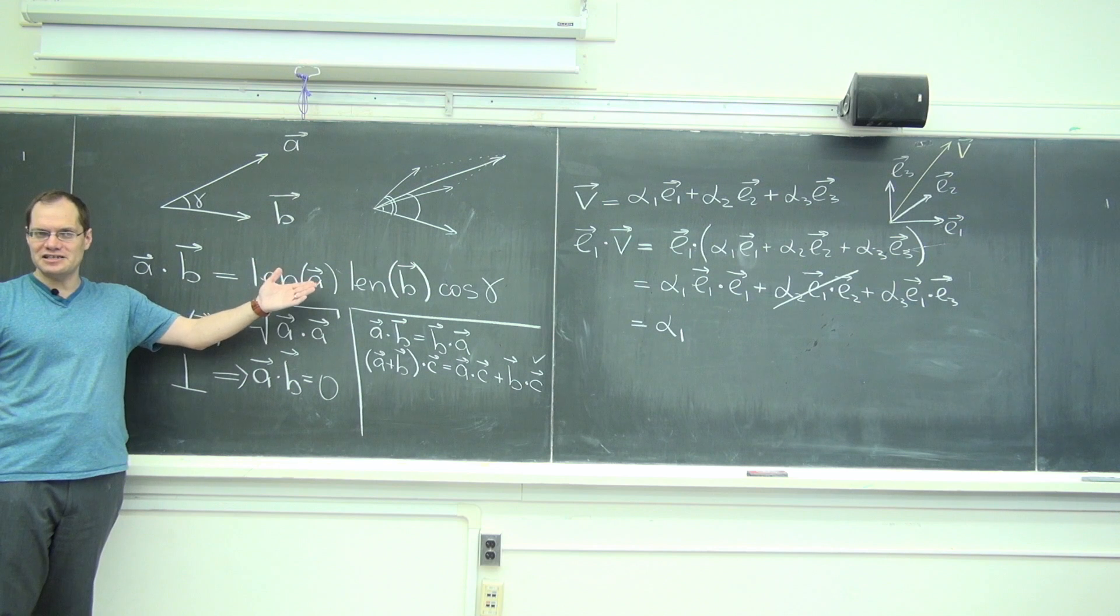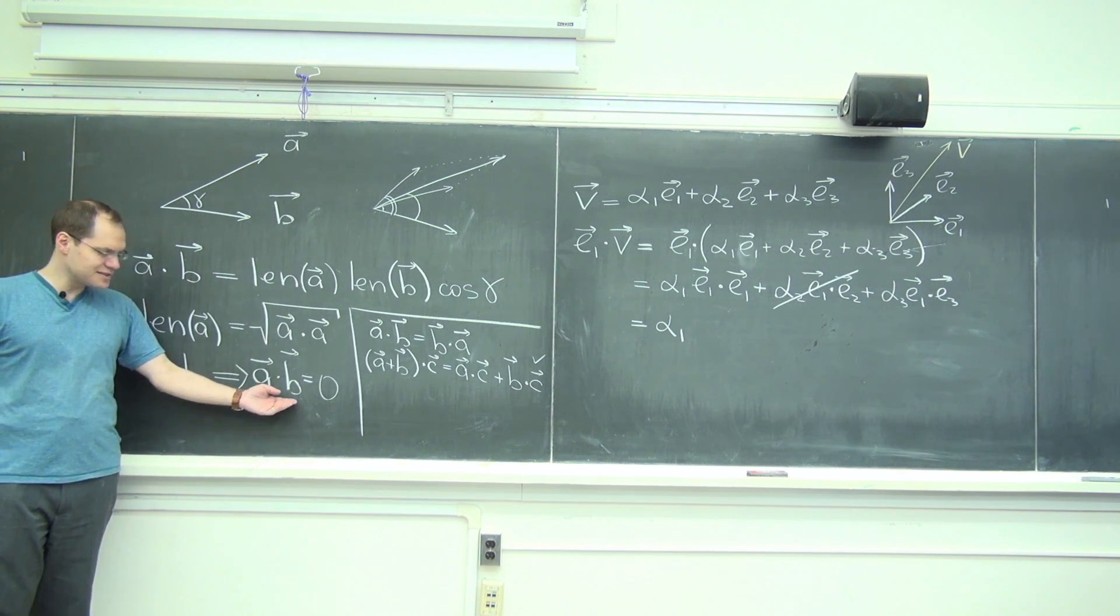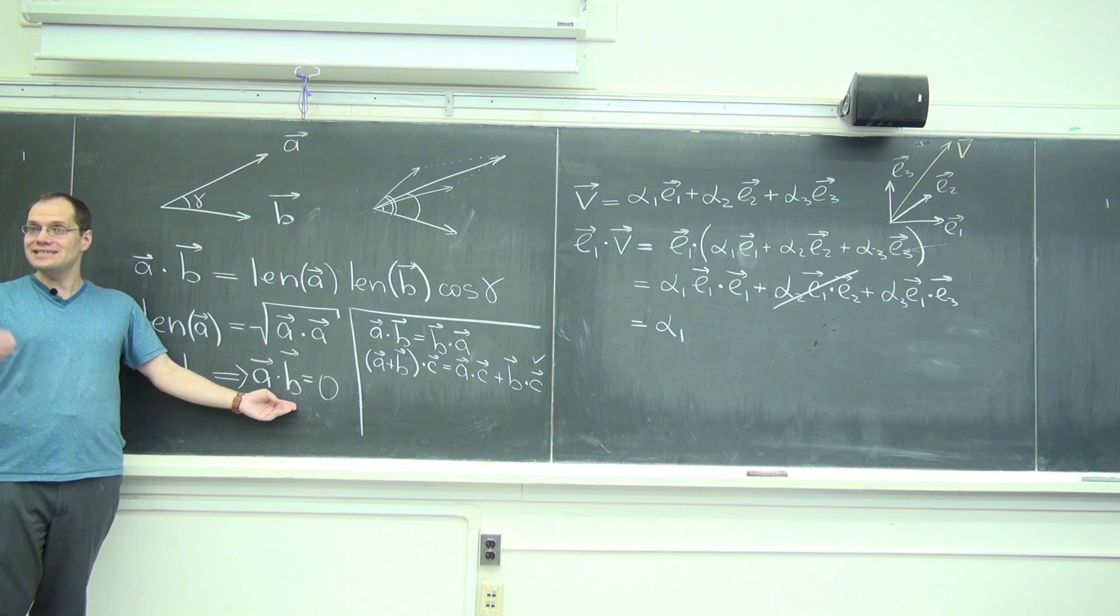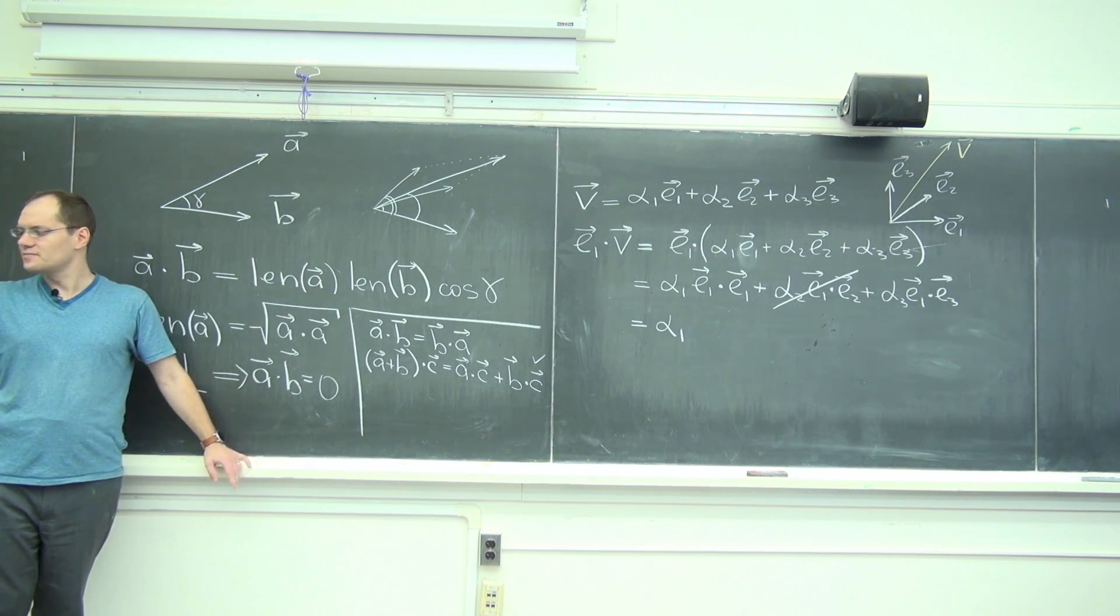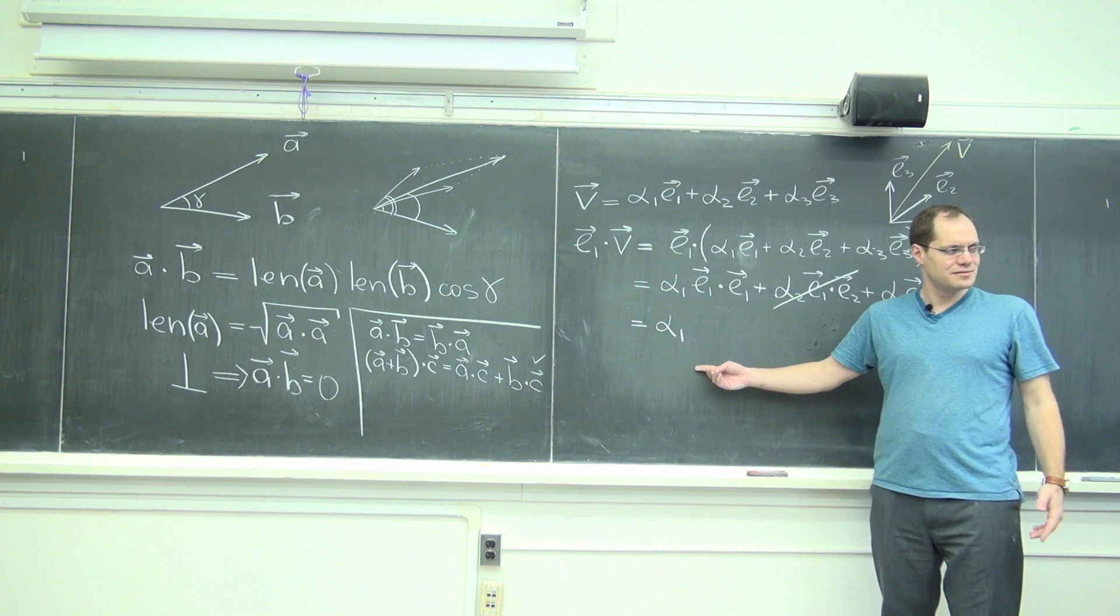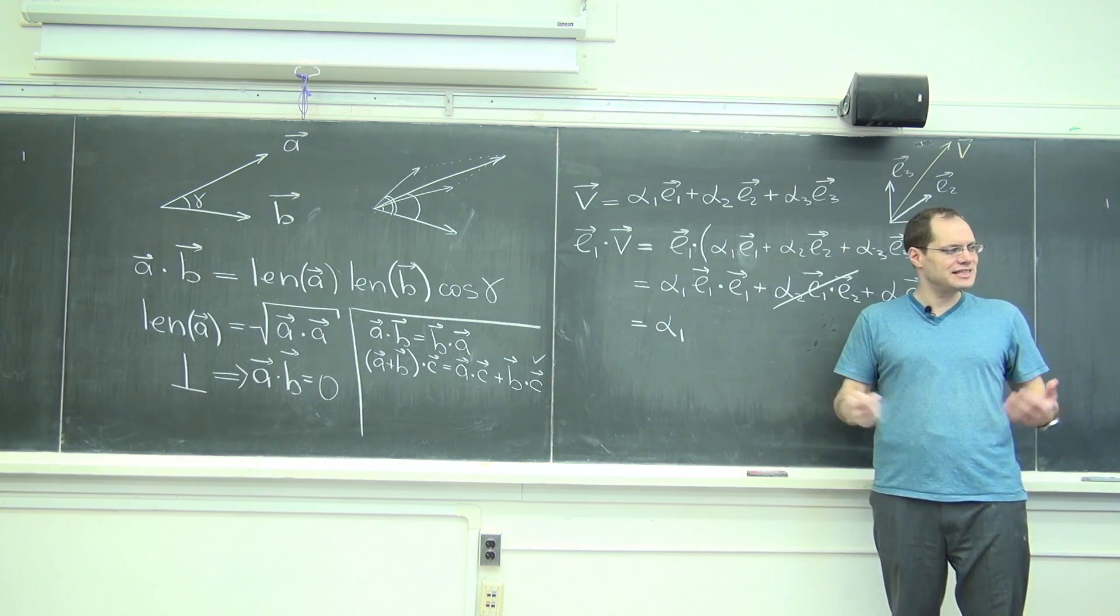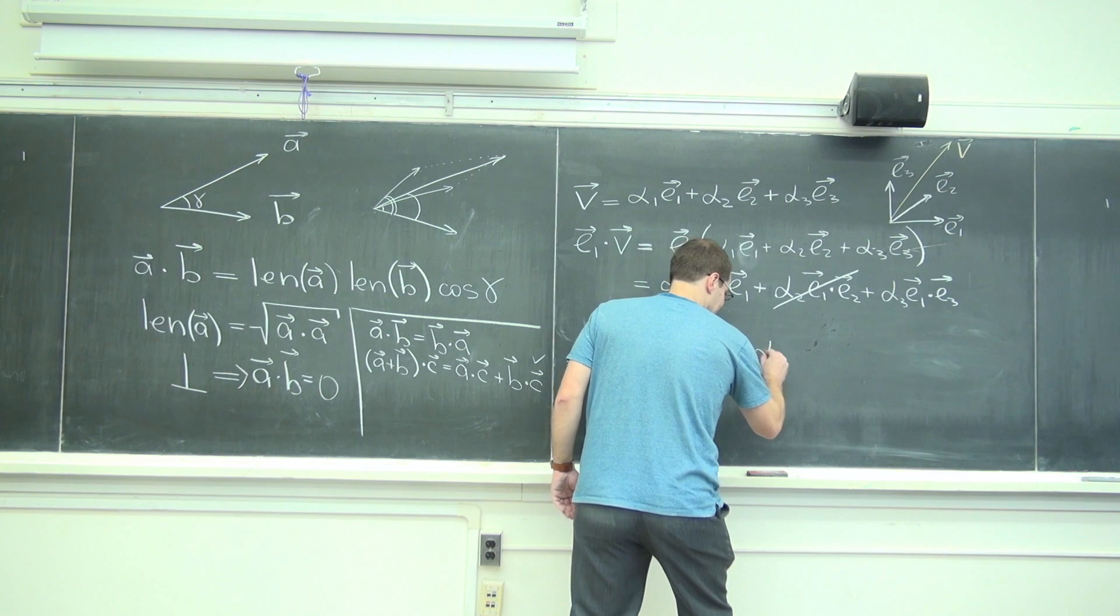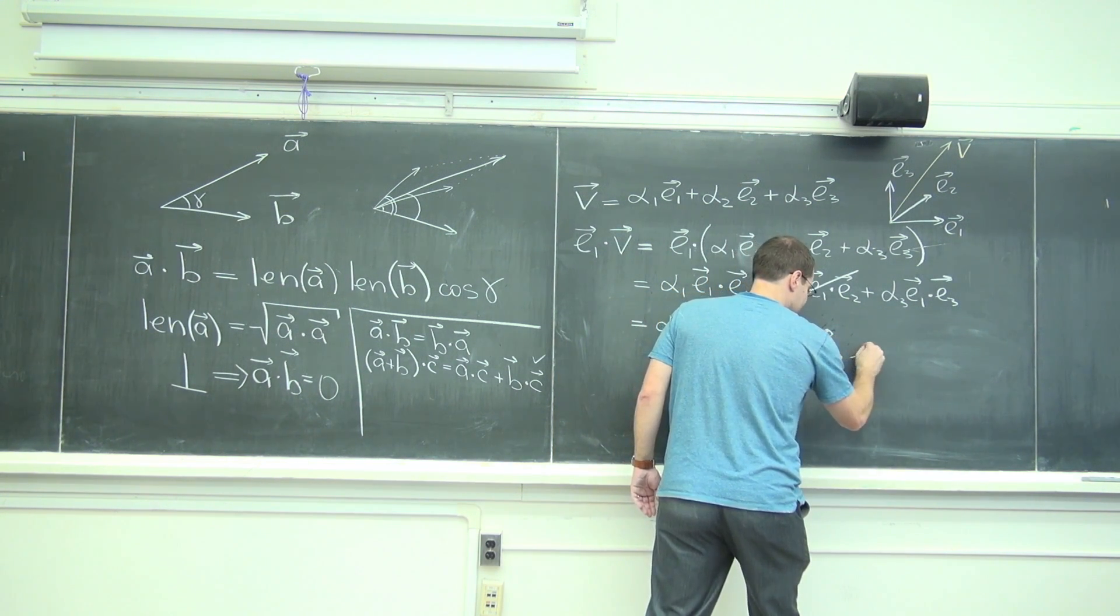Instead of saying A is orthogonal to B, you say A dot B equals zero. And what's E1 dotted with E3? Zero. So it's just alpha one. Hey, we got the coefficient. That's our goal. Decomposition means finding alpha one, alpha two, and alpha three. And we have just discovered that alpha one equals V dotted with E1.